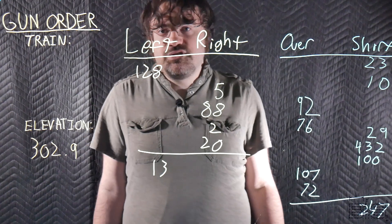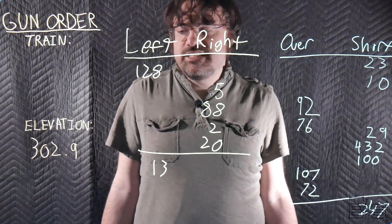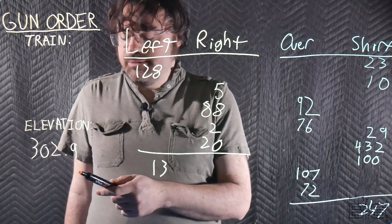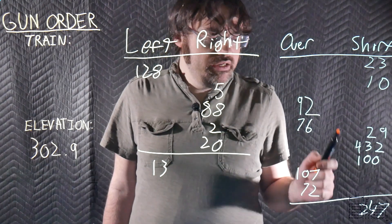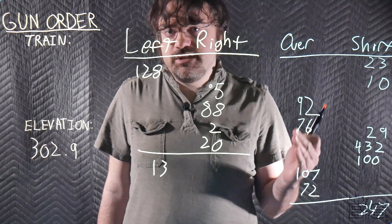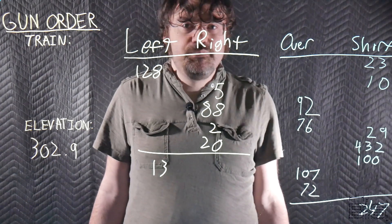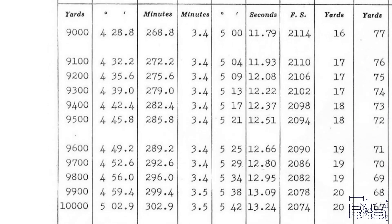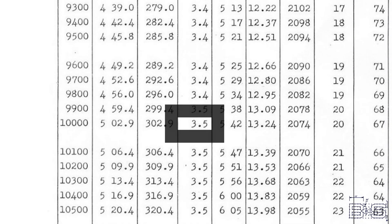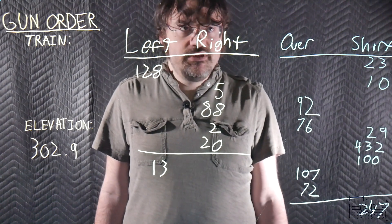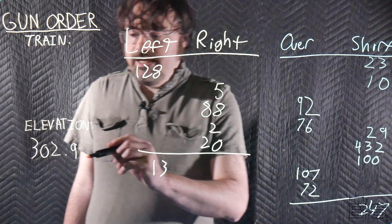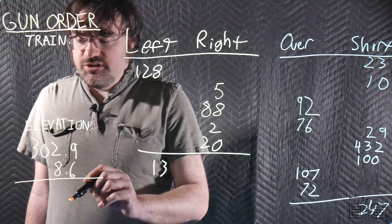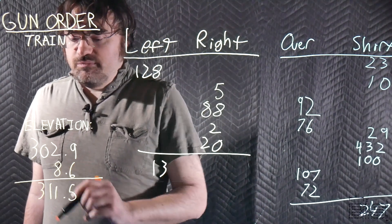The range table states that our guns should be elevated to 302.9 minutes. Gun angle is always measured in minutes. Minutes are more precise than degrees because they represent 1/60th of a degree. Now since we found out the range table angle will cause us to land short by 247 yards we need to increase it. The question is by how much? The range table states to increase the range by 100 yards we need to add 3.5 minutes to our gun angle. So for 247 yards we divide that by 100 and multiply it by 3.5 to get 8.6 minutes. Now we add that to our range table calculations and we get 311.5 minutes.